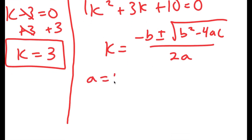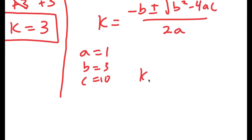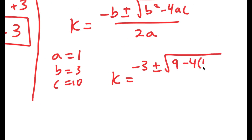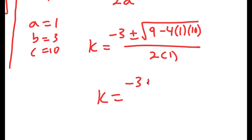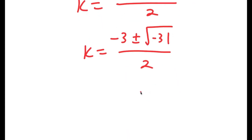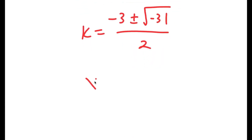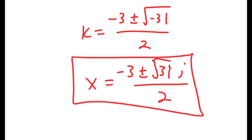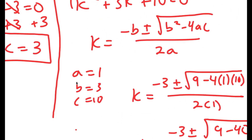In this case, a is 1, b is 3, and c is 10. So I get k equals negative 3 plus or minus the square root of b squared, which is 9, minus 4 times a, which is 1, times c, which is 10, all over 2a, so 2 times 1. This is equal to negative 3 plus or minus the square root of 9 minus 40 over 2, which is negative 3 plus or minus the square root of negative 31 over 2. I can rewrite this as negative 3 plus or minus the square root of 31 times i over 2, because i is equal to the square root of negative 1. So these are two more solutions of k, giving three solutions total.